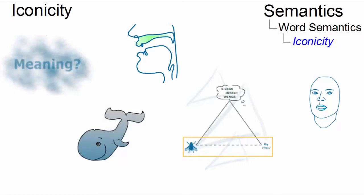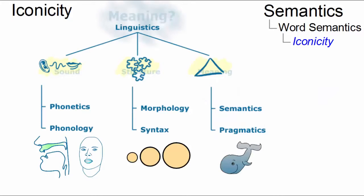Iconicity is a term used to refer to lexemes and other elements whose properties somehow closely correspond to the characteristics of the objects they refer to. In human language, in a narrow sense, only a few items are said to possess such symbolic properties.